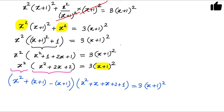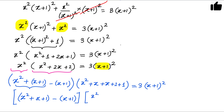So the first term becomes (x squared plus x plus 1) minus (x+1), and the second term becomes (x squared plus x plus 1) plus (x+1). This equals 3 times (x+1) whole squared.